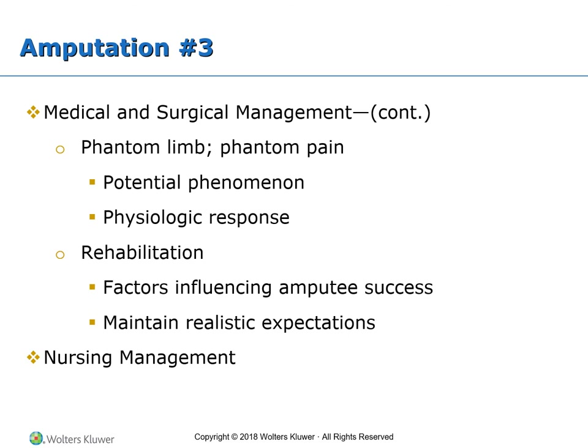Discharge teaching depends on many factors including length of hospital stay, type and location of the amputation, age and physical condition, and the type of dressing and prosthesis the client wears. Factors related to the home environment influence the plan for rehabilitation after discharge. Some clients need to modify their living arrangements with a wheelchair and other accommodations.